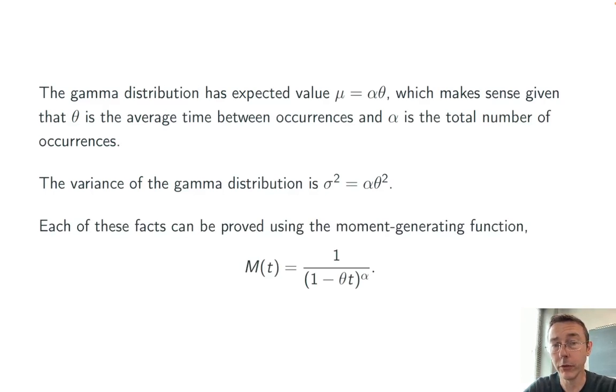Each of these can be proved using the moment generating function, m of t equals 1 over 1 minus theta t, quantity to the alpha. I won't go through any of those proofs right here. You can easily Google those if you need to.